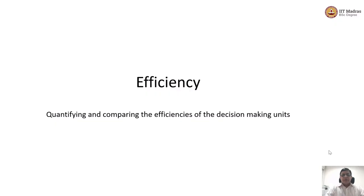Good morning everyone, welcome to this new session on efficiency. When engineers look at efficiency, they say 'I know about this.' For example, they would say a motor is supposed to have a rated output of 110 kilowatts and it is only giving 100 kilowatts, so probably the motor is running at an efficiency of 100 divided by 110.